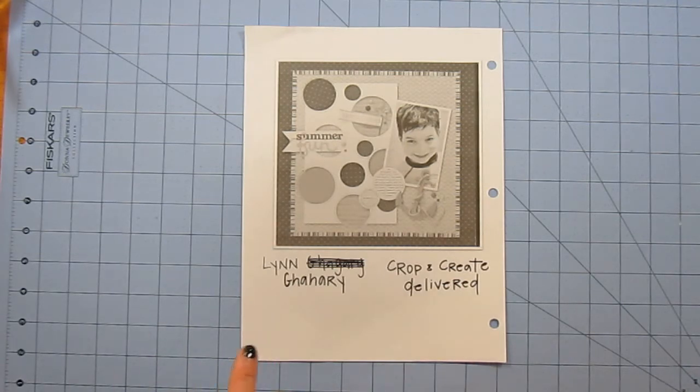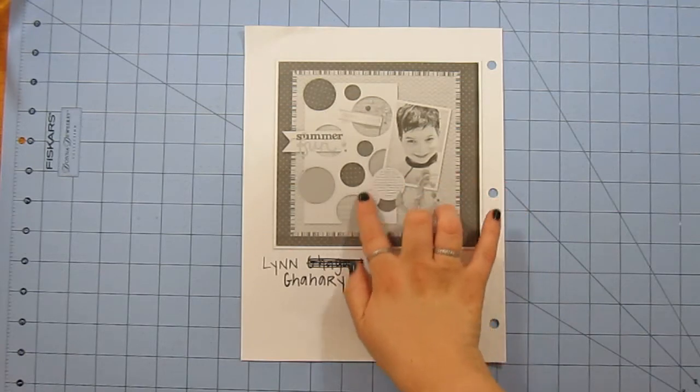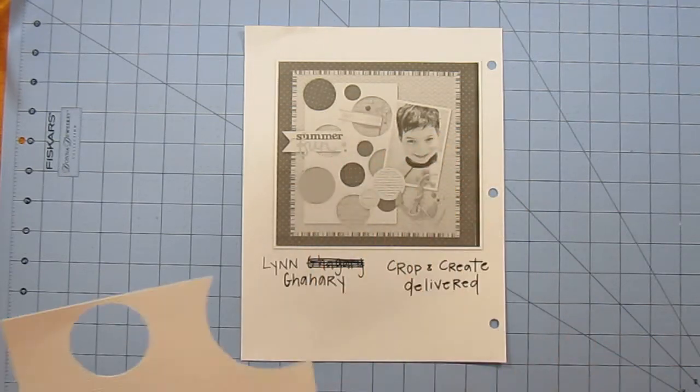What really spoke to me about this layout was this die-cut shape right here. I just thought that was really nice and I thought it was really clean. And I liked the way she used the patterned papers behind it. I just really liked it.